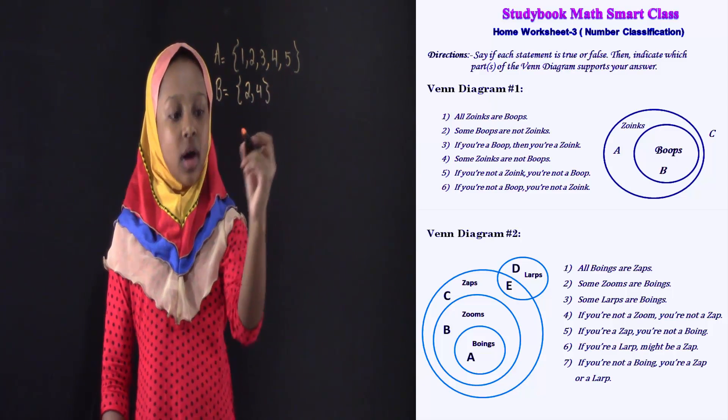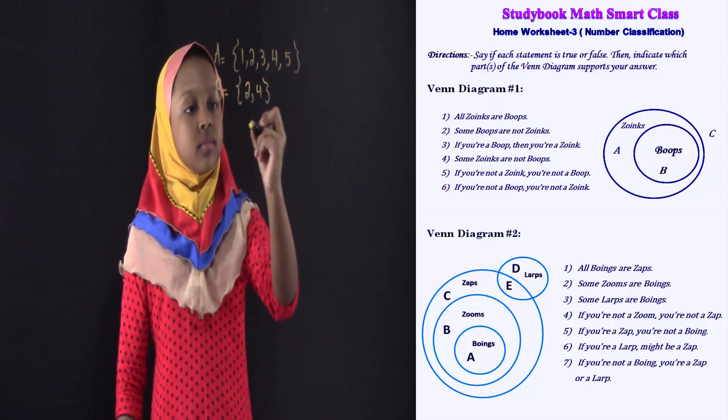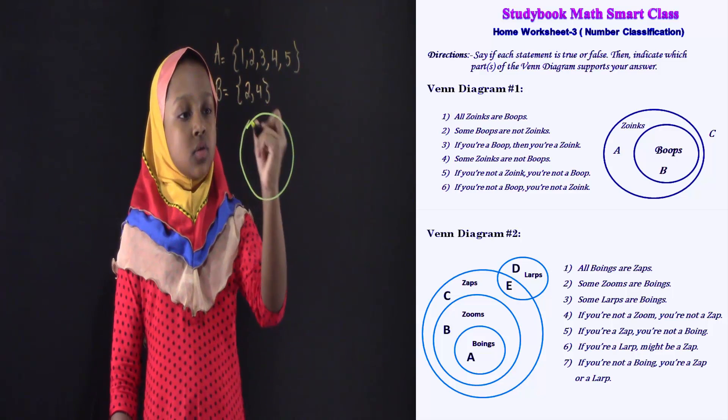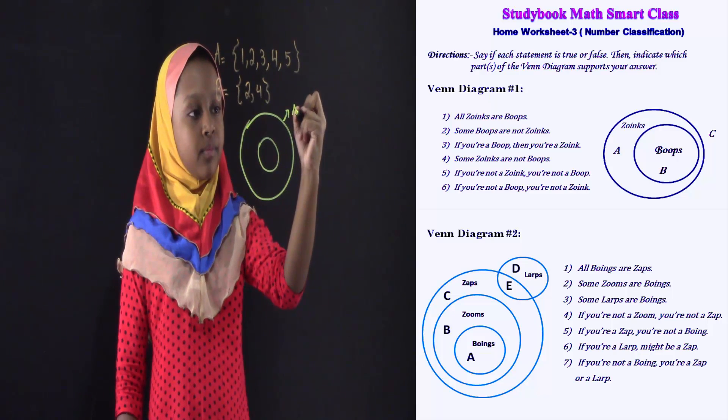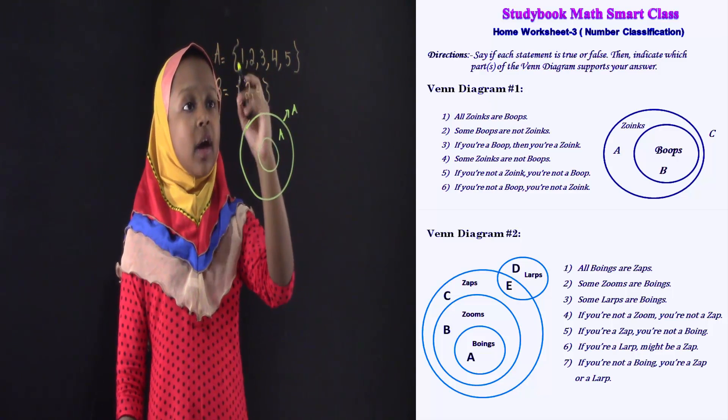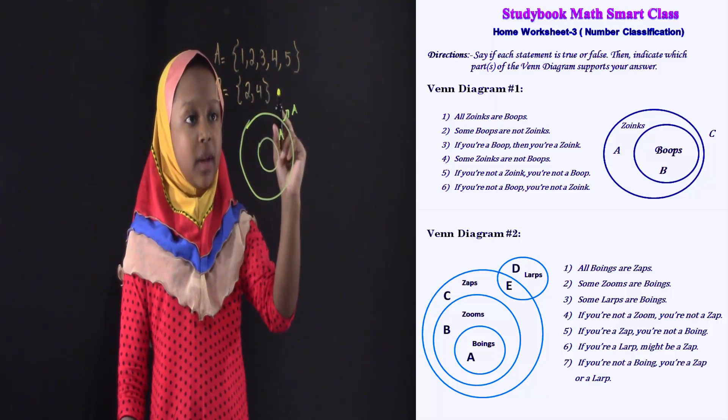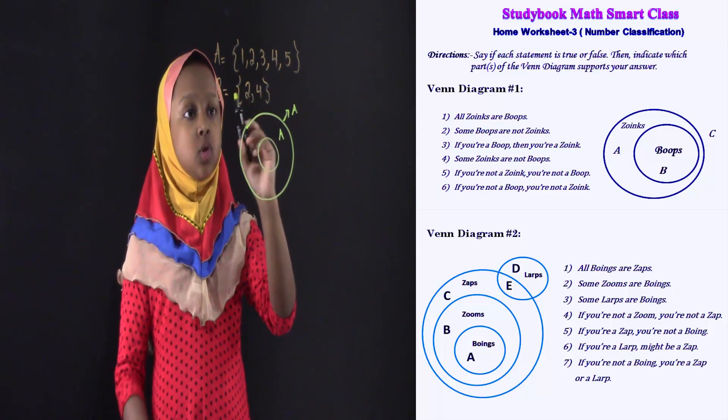And now I'm going to draw a Venn diagram. For my Venn diagram, this is A. And in A, we have one, three, and five. And B, we have two and four also.